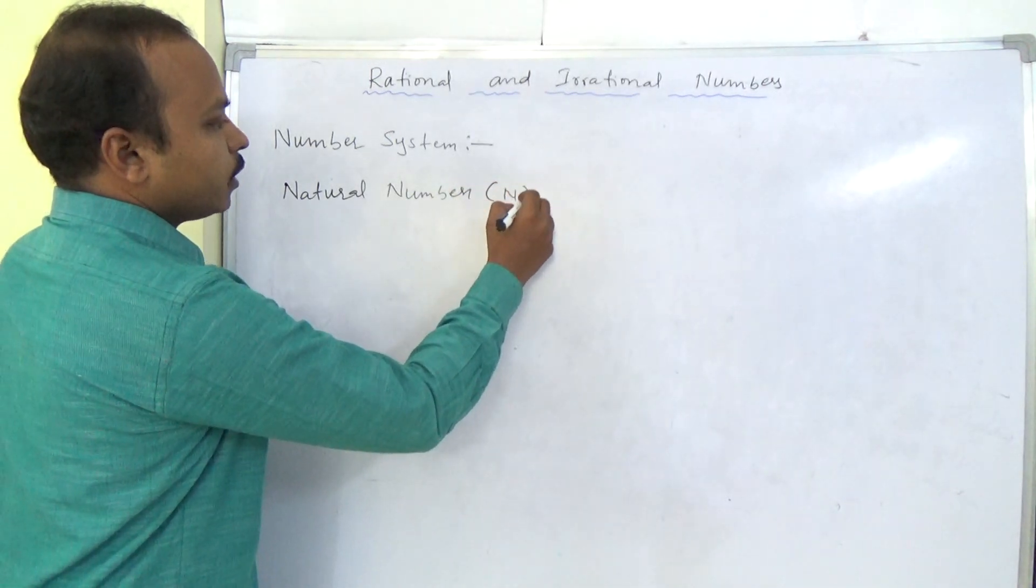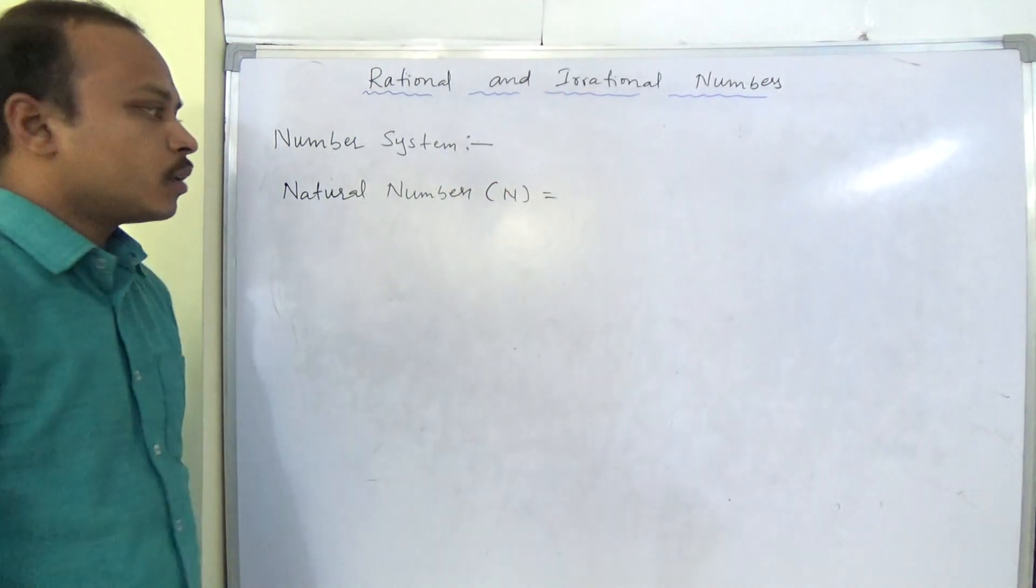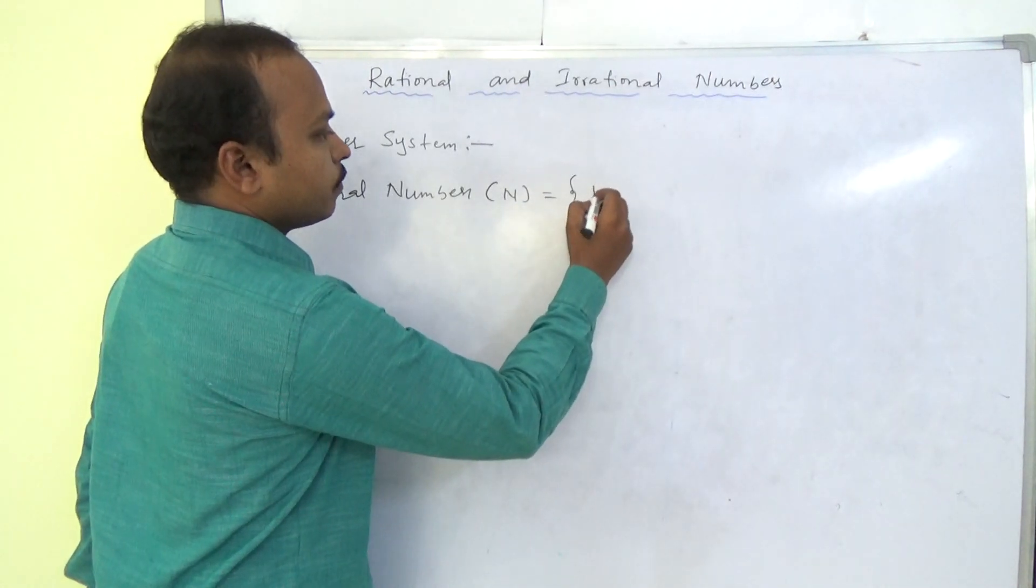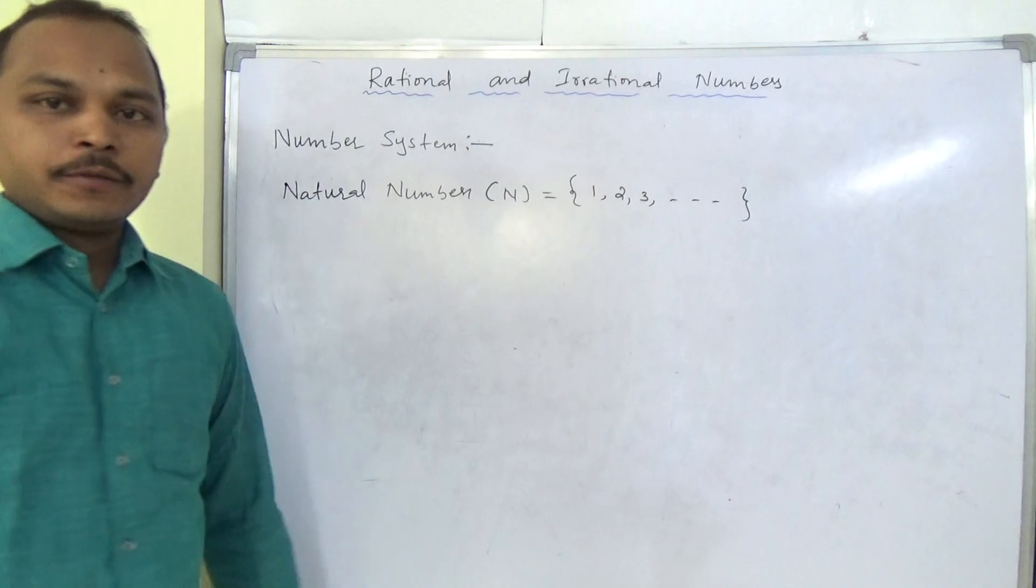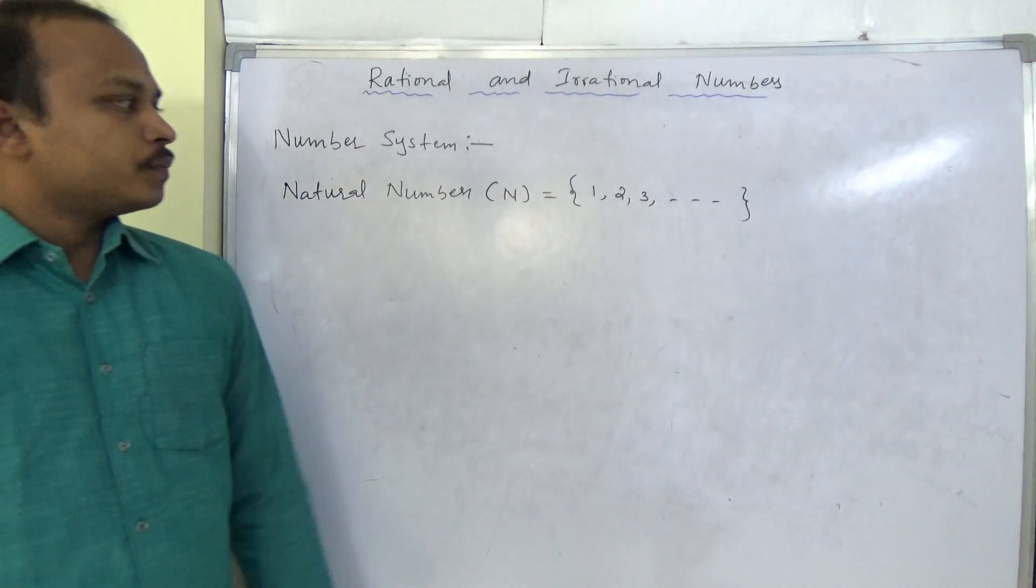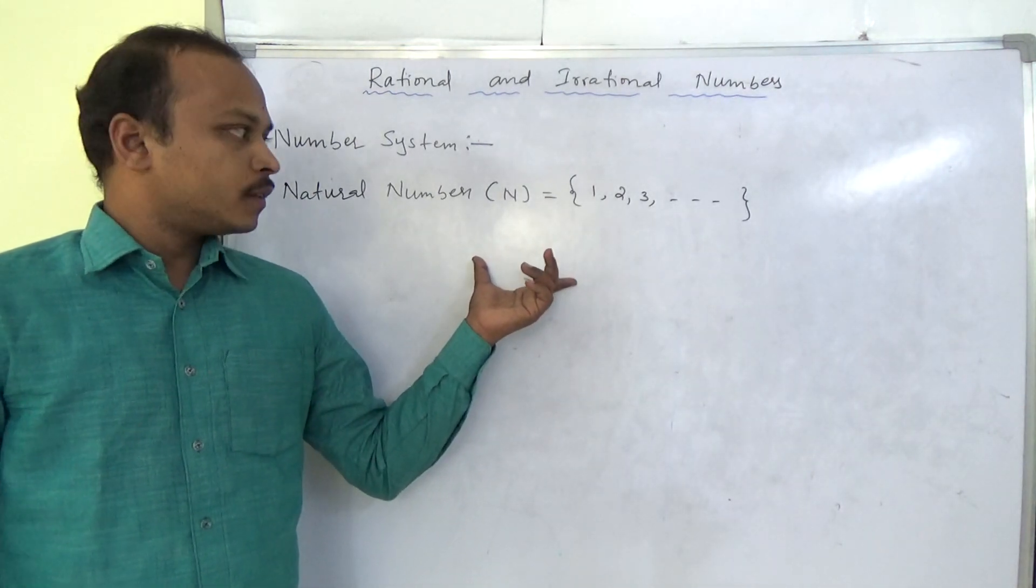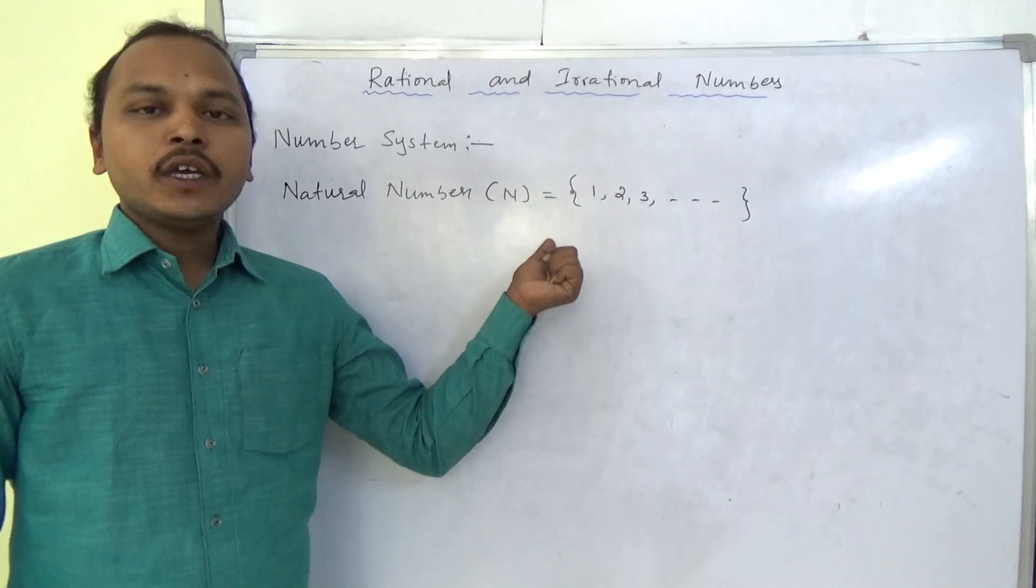We will denote with N. These natural numbers will start from one, two, three, and so on up to infinity. Now, in these natural numbers, when we include zero...